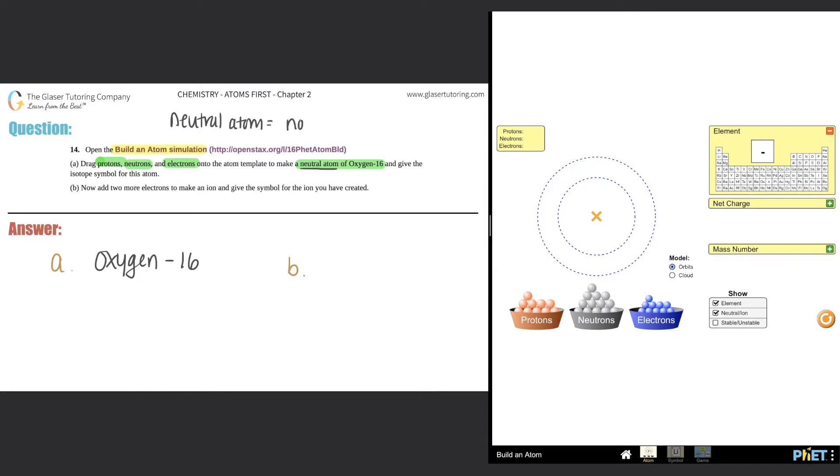A neutral atom means no charge. Whenever something has no charge, that means the net charge should be zero. If my net charge equals my number of protons minus my electrons, and if it's zero, technically my protons and my electrons should have the same number.